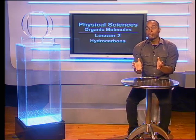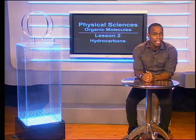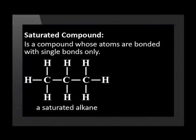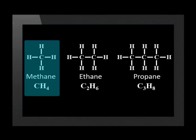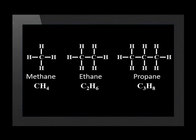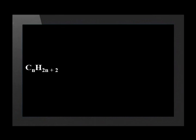Hello, Grade 12s. Now that we have more of an idea of the basics of organic chemistry, let us look at the various homologous series in a bit more detail. You will recall that alkanes all have single bonds between the carbon atoms. They are called saturated hydrocarbons. A saturated compound is a compound whose atoms are bonded with single bonds only. Methane has the formula CH4, ethane is C2H6, and propane C3H8. Alkanes have the general formula CnH2n+2. You can check all the alkanes and you will see that this formula fits.